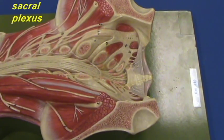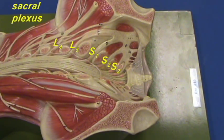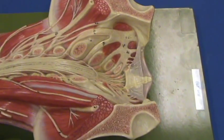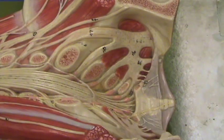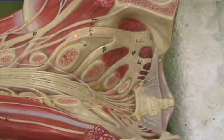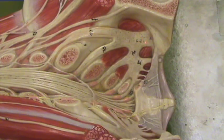Here is a look at the sacral plexus. The sacral plexus is going to have contributions from L4, L5, S1, S2, S3, and S4. You can see that fibers from these nerves are interweaving with one another, forming this sacral plexus. One of the key nerves that is going to originate from this plexus is right over here — it is the sciatic nerve.